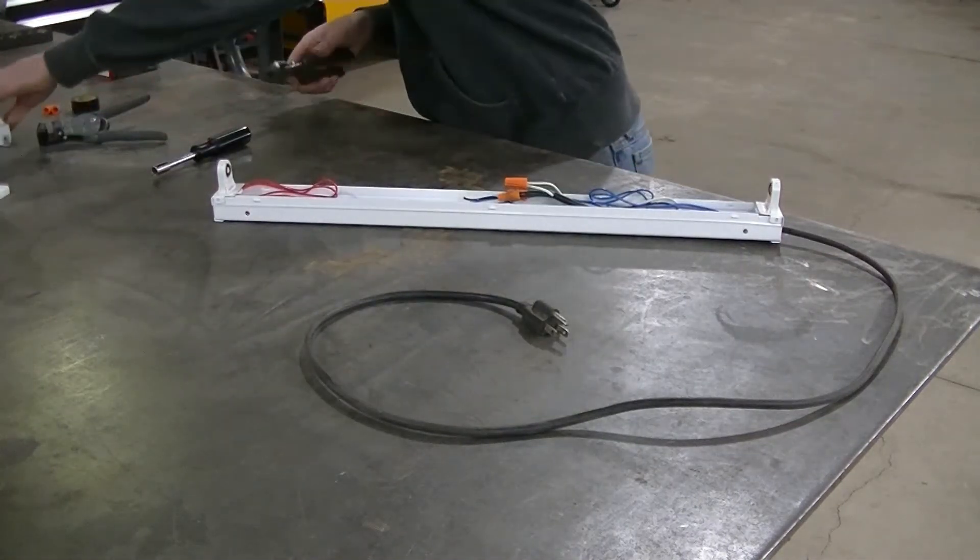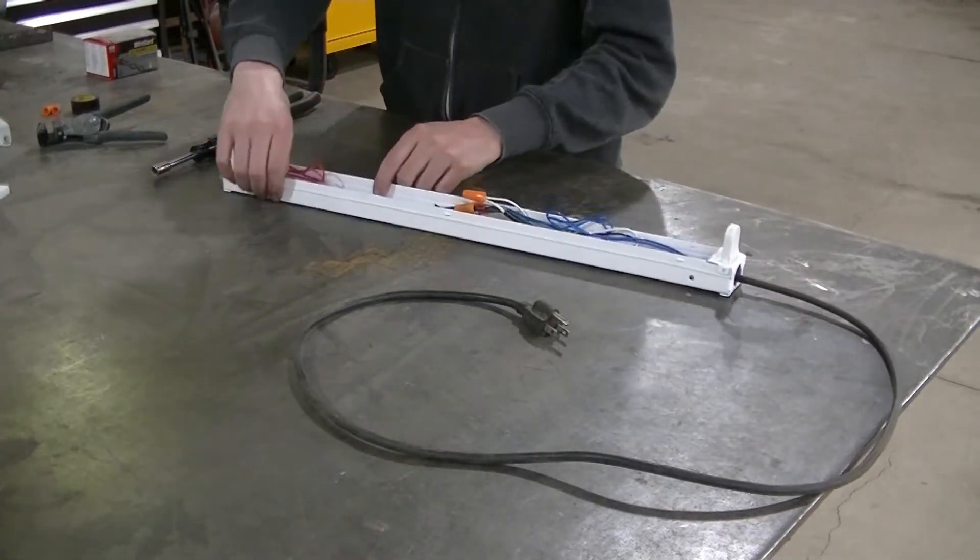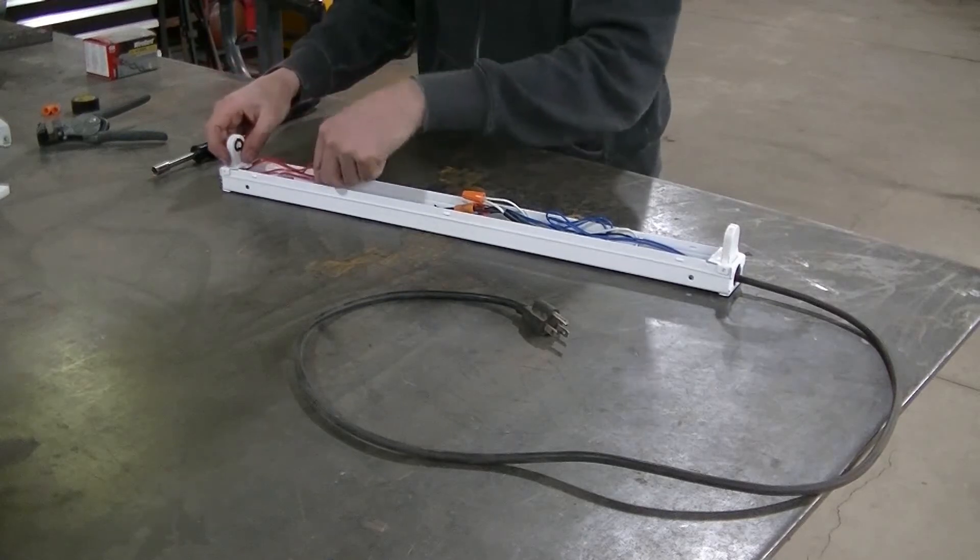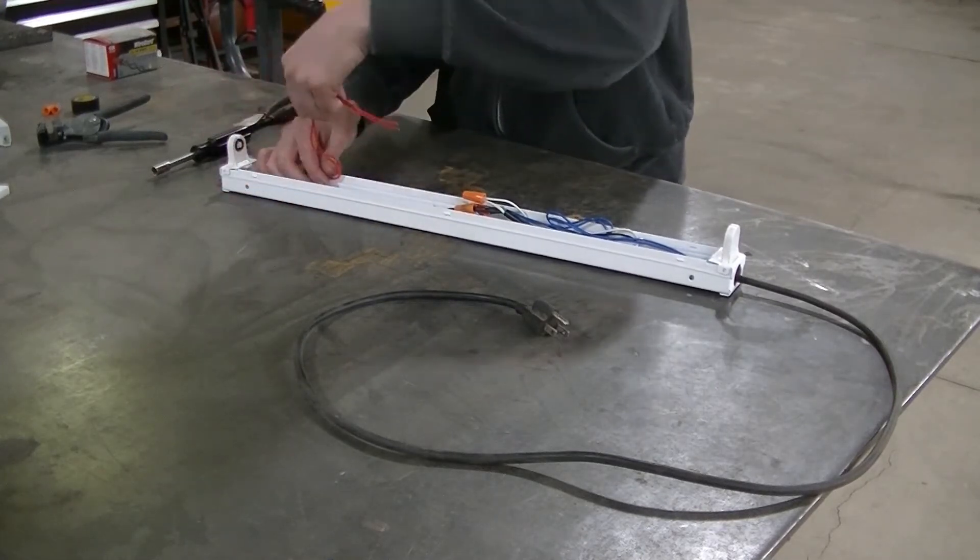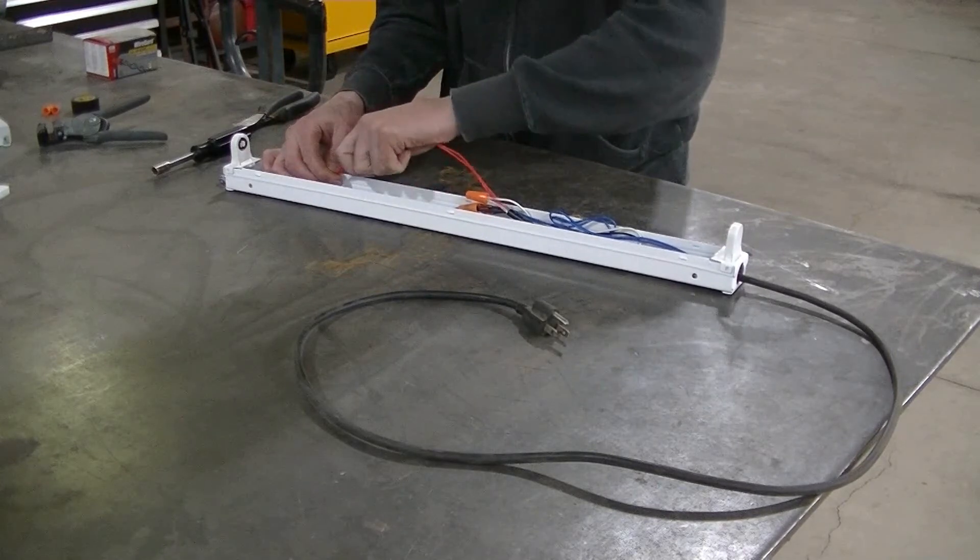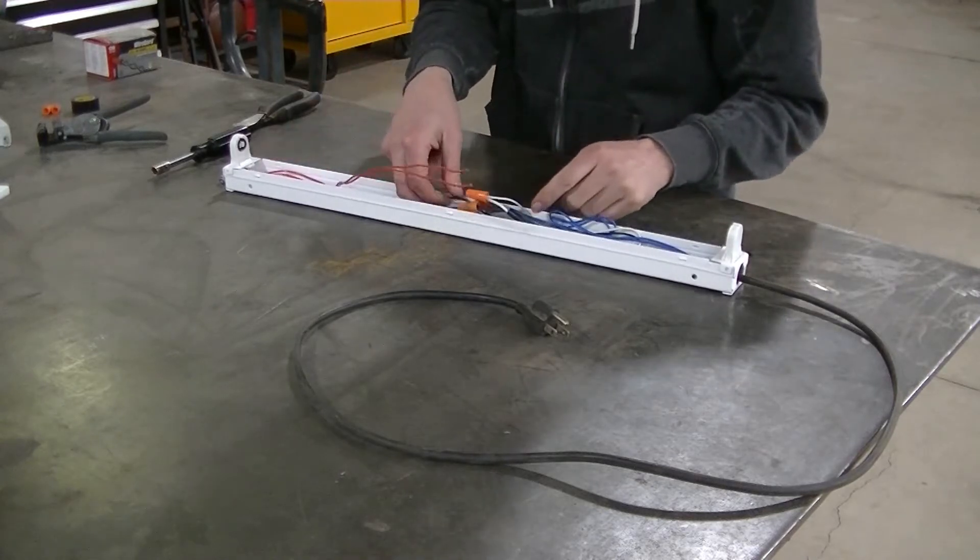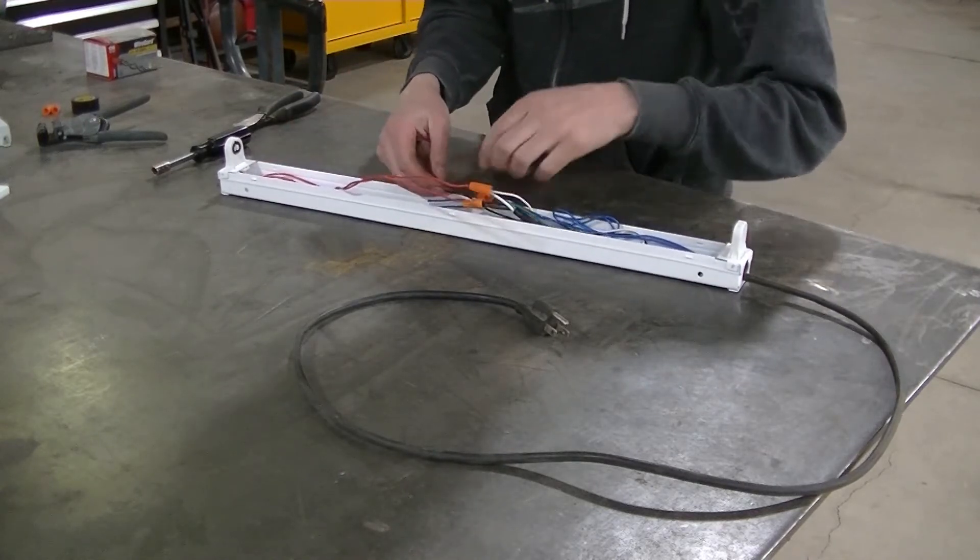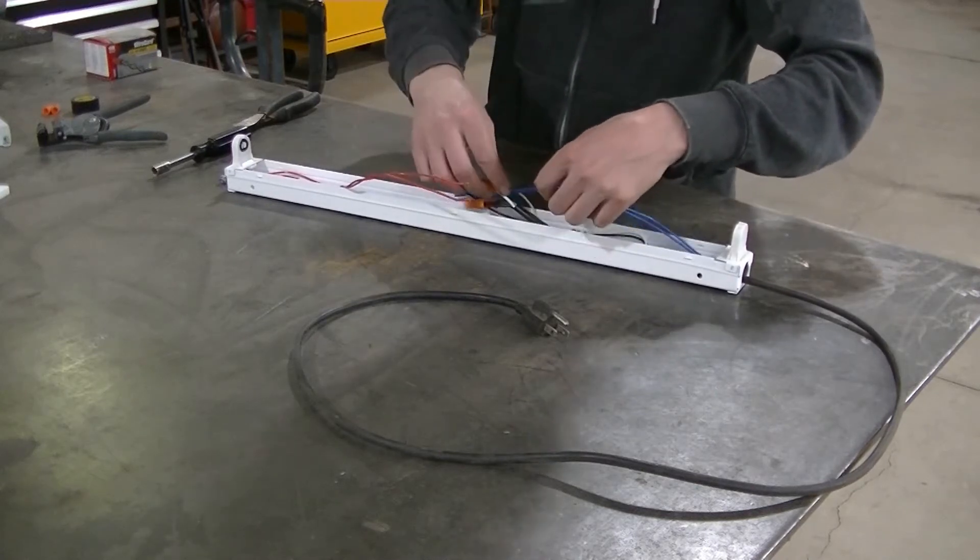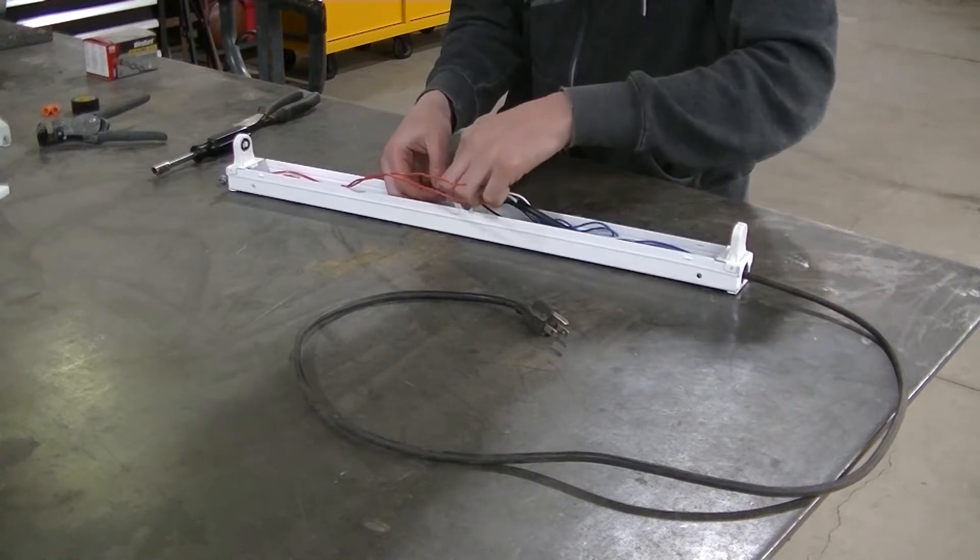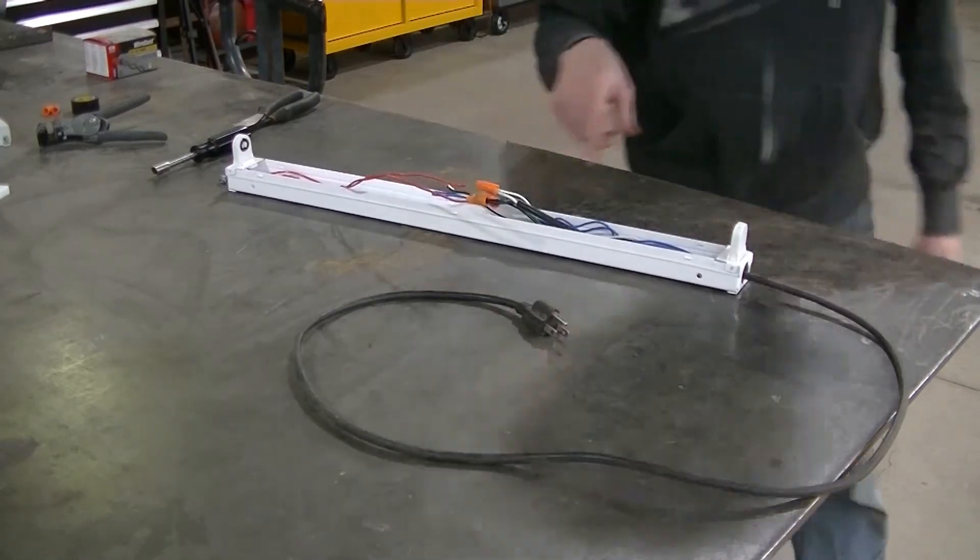This ballast is junk. Throw it in the garbage. Old technology guys. LED is the way to go. So here you can see we've got more than enough wire on this side to go to the white or the black wire. And then this side here again, plenty of wire to be able to wire this other side to the other wire.